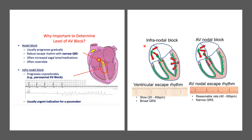Now complete heart block or third degree heart block may be at two levels. It may be at the level of the AV node, known as the AV nodal block, or it may be below the level of the AV node in the conducting system, which is known as the infranodal block.